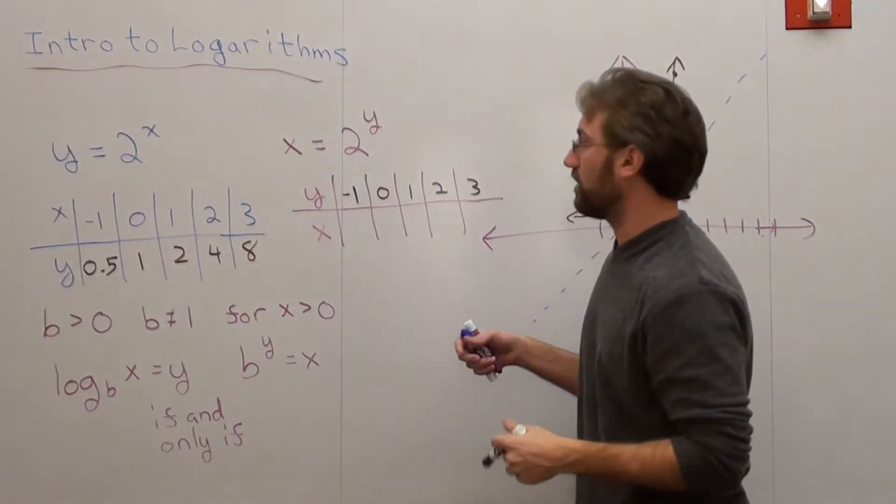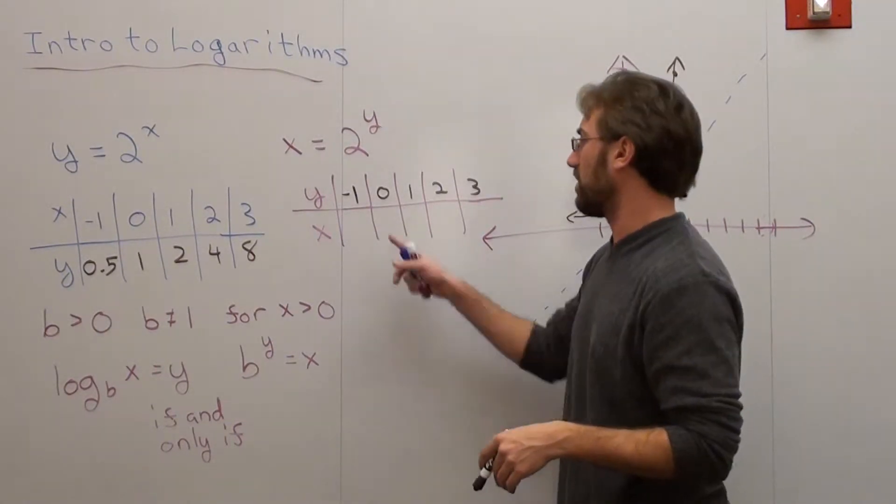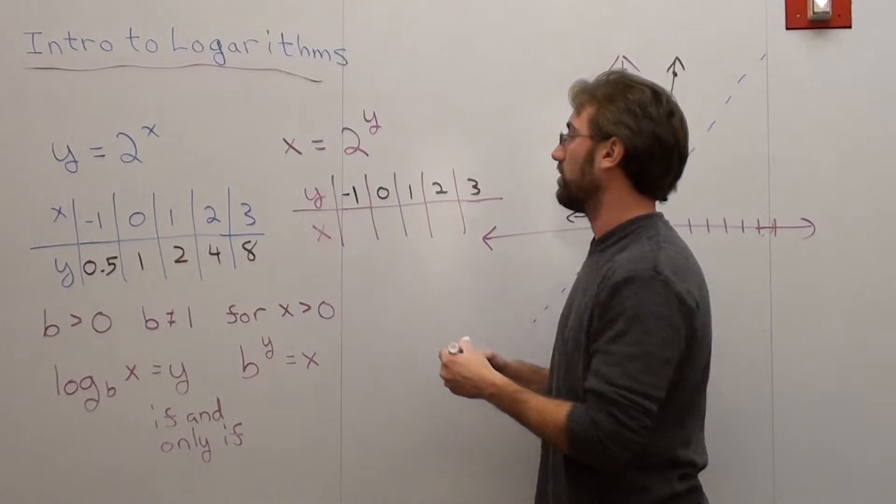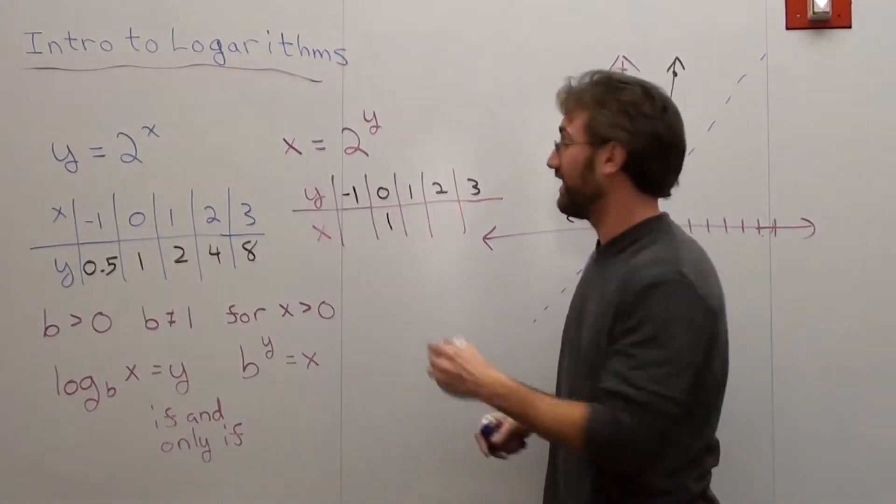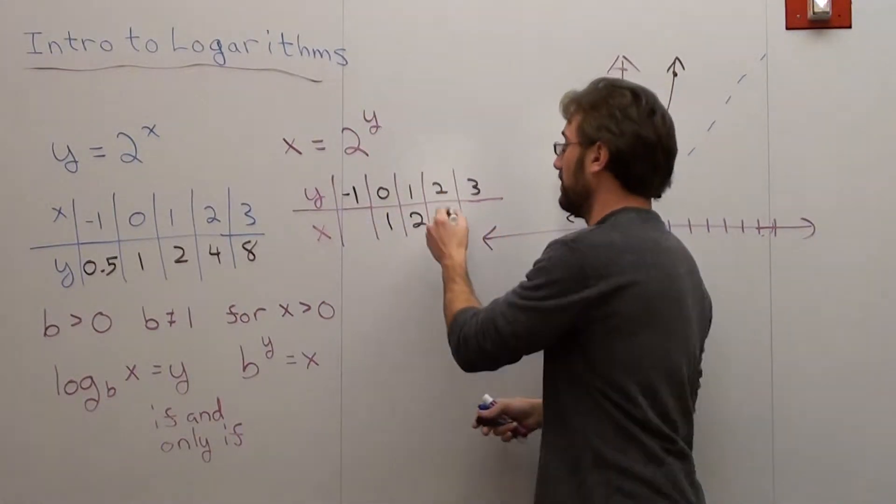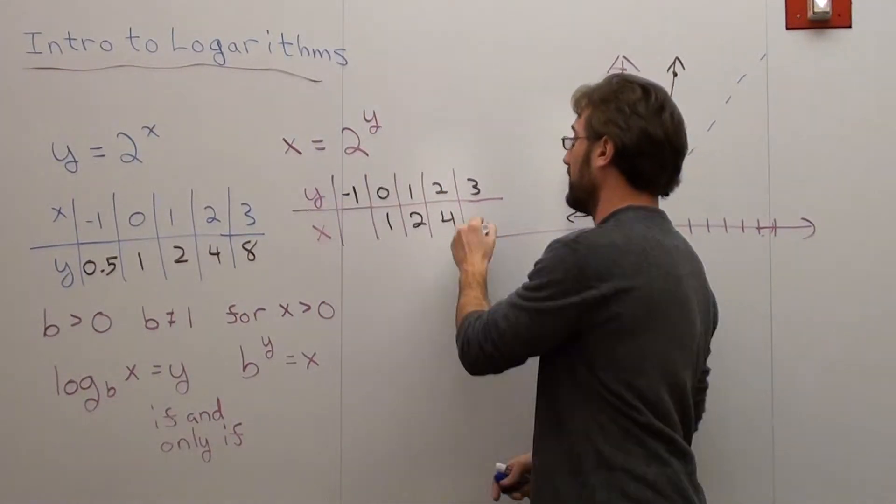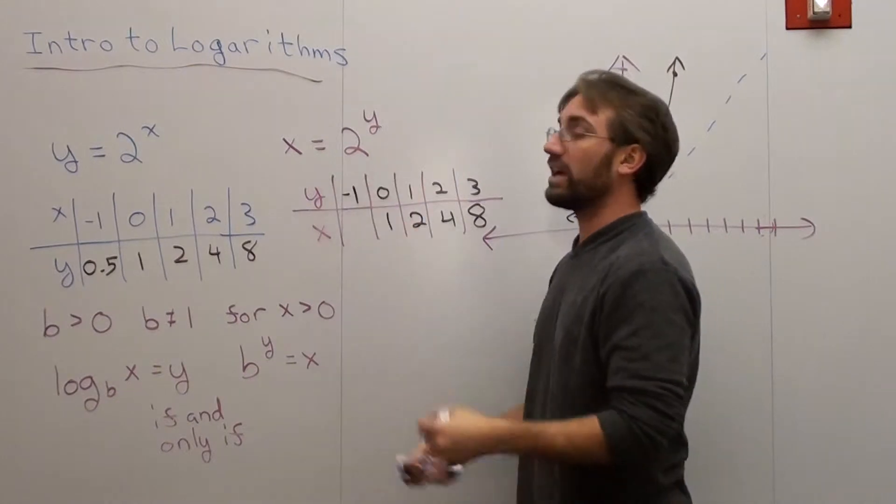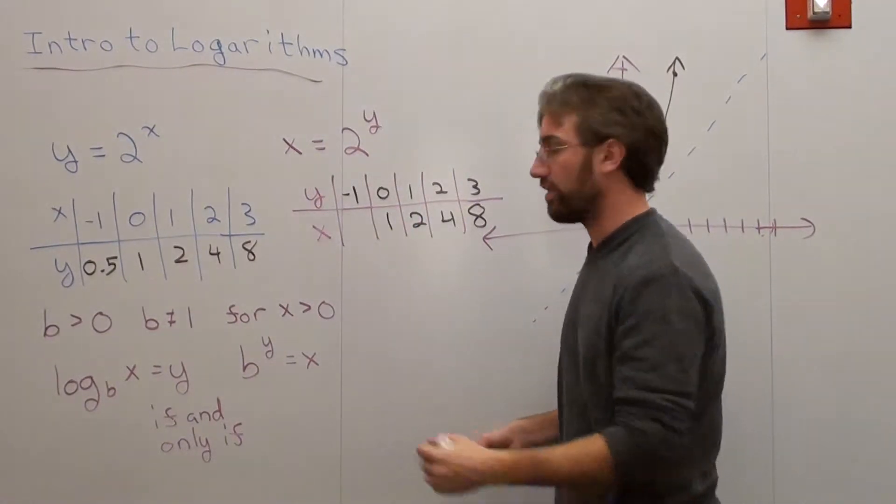Now, when you do that, you get very interesting results here. And we'll start with the easiest one. 2 to the 0 is 1, 2 to the 1 is 2, 2 to the 2 is 4, 2 to the 3 is 8, and 2 to the negative 1 is 1 half or 0.5.